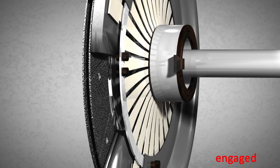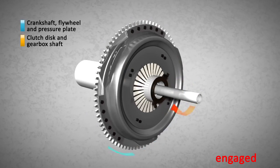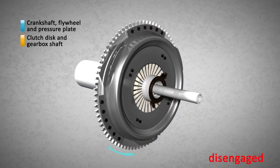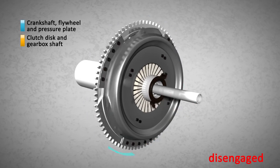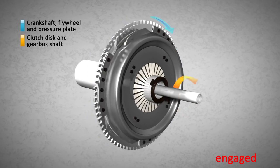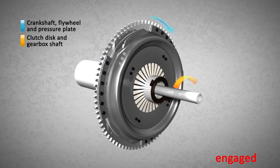So, the clutch disc can be locked between the flywheel and the pressure plate when the release bearing is released, and it can be released when the bearing is pushed into the diaphragm spring. The mechanical energy produced by the engine is transmitted to the gearbox when the clutch release bearing is released, and the clutch disc is engaged.